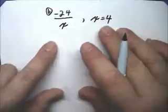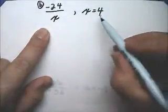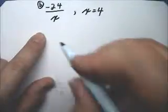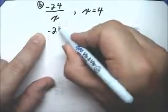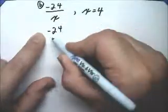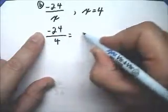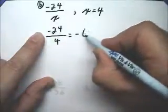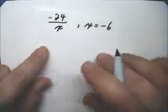In B, we have negative 24 divided by x when x equals 4. So this is negative 24 divided by positive 4, and this answer is negative 6 — because a negative divided by a positive is a negative.